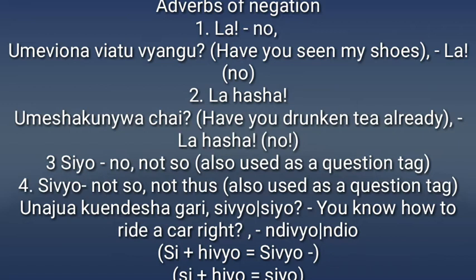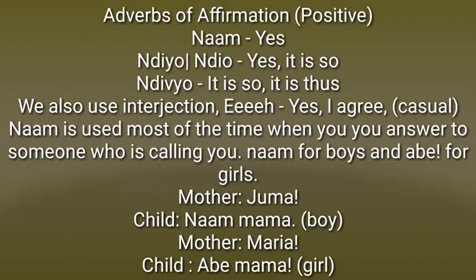We also have 'siyo,' meaning 'not' or 'not so,' used as a question tag. And 'sivyo,' meaning 'not so' or 'not thus,' also used as a question tag — more so than 'siyo.' Example: 'unajua kuendesha gari, sivyo?' or 'unajua kuendesha gari, sio?' — you know how to drive a car, right? When the tag is 'sivyo,' the affirmative answer is 'ndivyo.' When it is 'siyo,' the answer is 'ndiyo.'